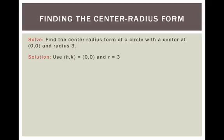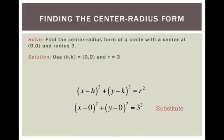Find the center-radius form of a circle with a center at the origin, (0, 0), and a radius of 3. So I know my h is 0, my k is 0, my r is 3. Do we want to type this in? Well, no. We can clean it up a little bit.